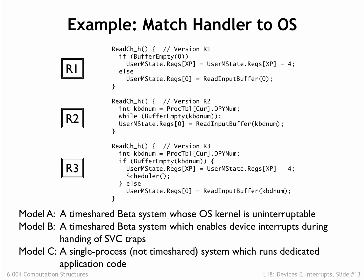Looking at R1, we see it's similar to attempt 2 from the previous section, except it always reads from the same keyboard regardless of the process making the SVC request. That wouldn't make much sense in a time-sharing system, since a single stream of input characters would be shared across all the processes. So this handler must be intended for the Model C system, which has only a single process.